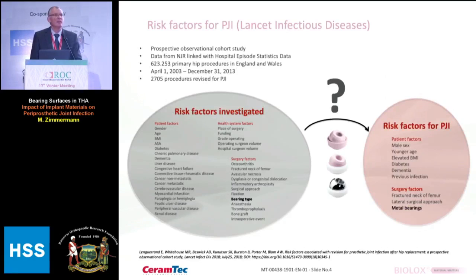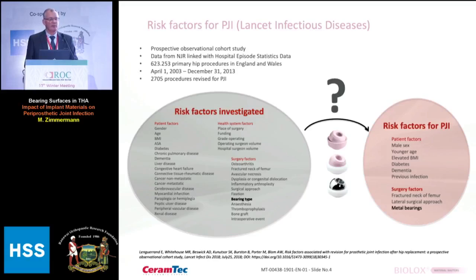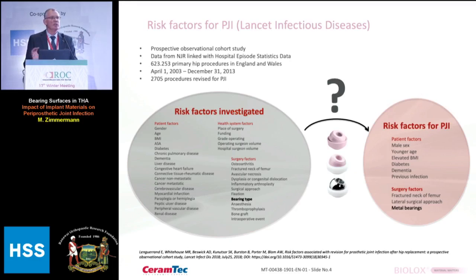Last year, a very comprehensive study was published in The Lancet showing the risk factors for PJI based on more than 620,000 total hip arthroplasties performed in England and Wales between 2003 and 2013. Amongst all the possible risk factors shown on the left-hand side, they identified some which are really related to the risk of PJI — some patient-related, like sex, age, and BMI, and some surgery-related, like material bearings.